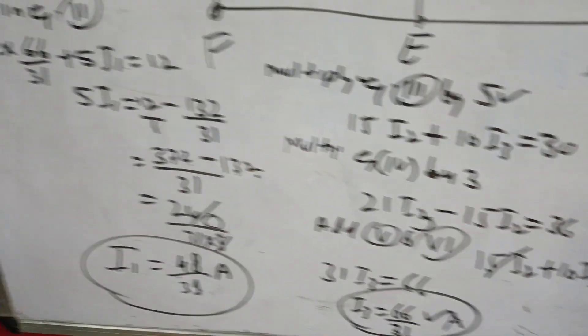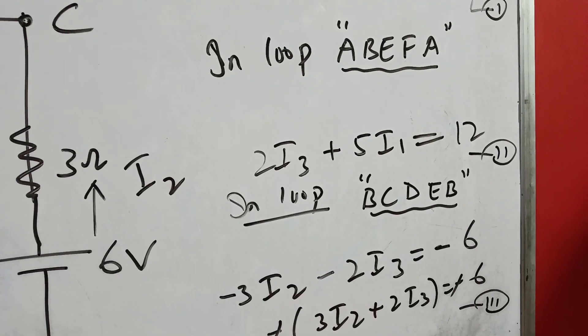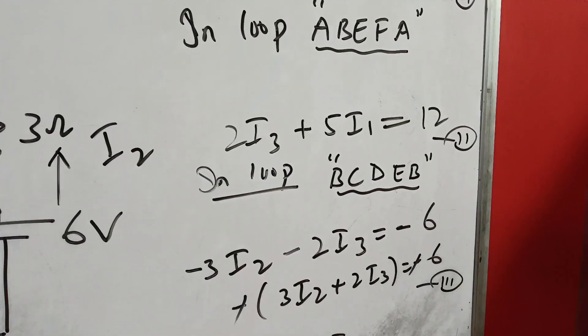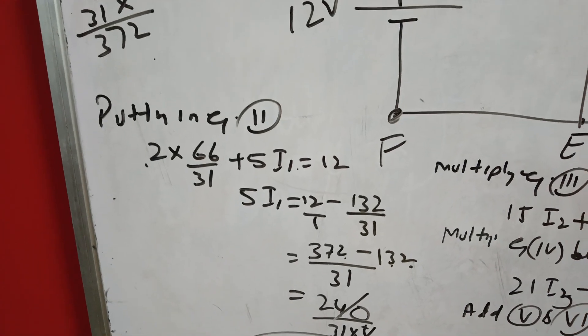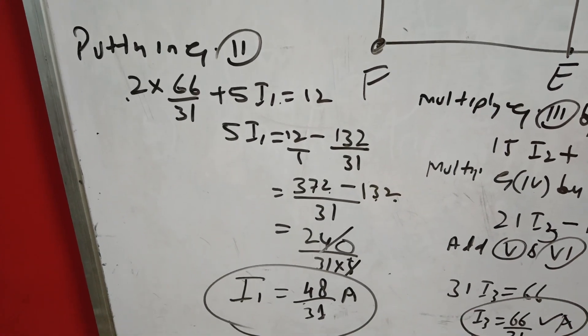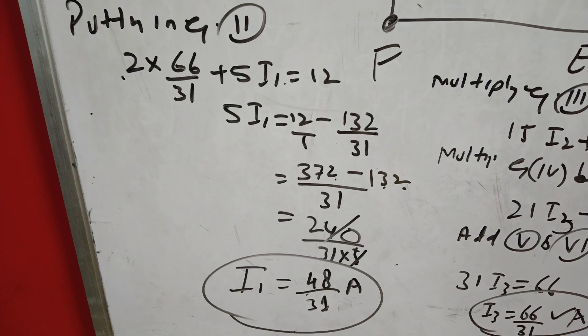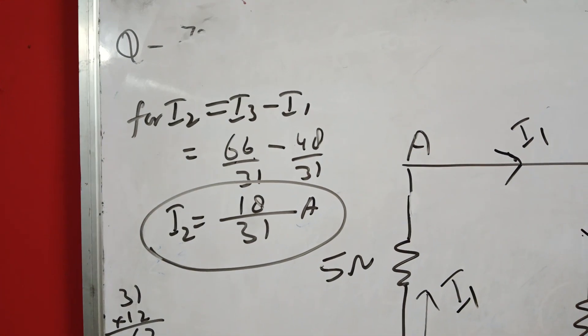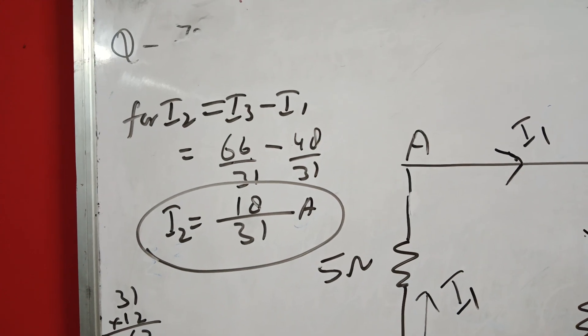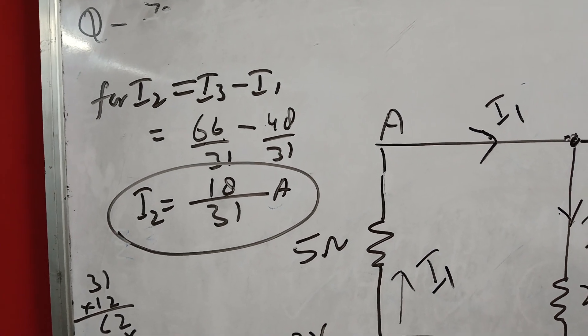Now this value of I3 we can put in equation 2. We can write 2I3 plus 5I1 equals 12. So 2 into 66 upon 31 plus 5I1 equals 12. Solving it, we get I1 equals 48 upon 31 ampere. For I2, we can write I3 minus I1 from equation 1, putting the values we get 18 upon 31. These are the respective values of I1, I2, and I3.